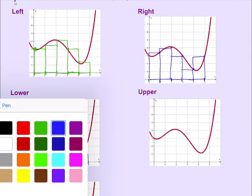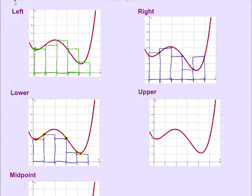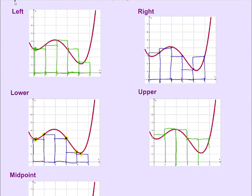The upper Riemann sum — hopefully you can guess at this point — is the same idea as the lower sum, but instead of choosing the minimum y value from each interval, we'll choose the highest point: the highest y value anywhere in the sub-interval. We'll keep doing that until we have all five rectangles.